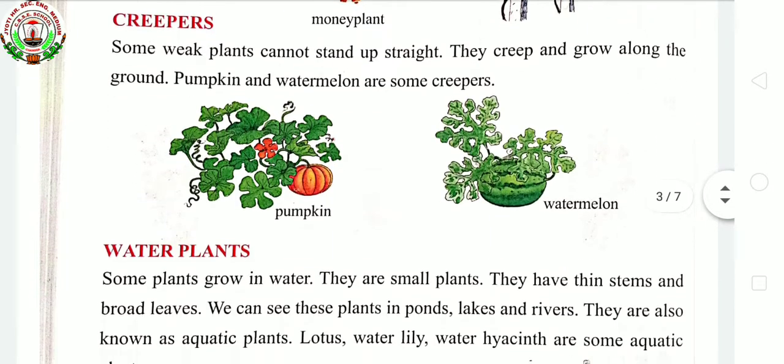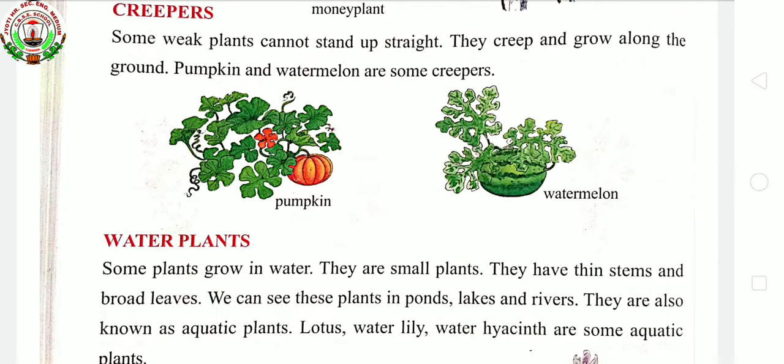Next, creepers. Creepers are plants that also cannot stand up straight. Unlike climbers, they do not climb up. Instead, they creep and spread along the ground. Examples are pumpkin, gourd, watermelon, and muskmelon. They have weak stems and thin branches.